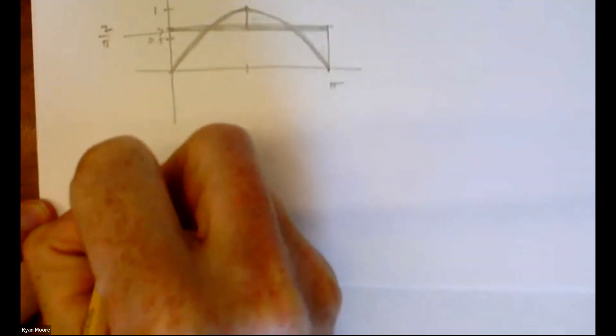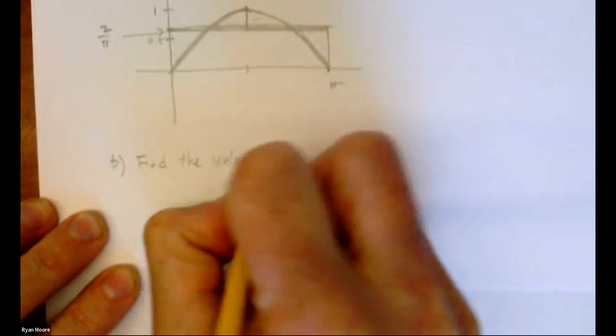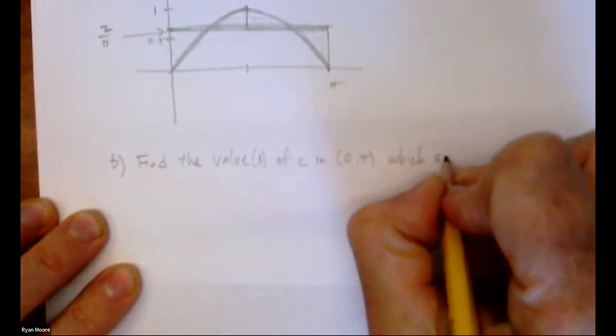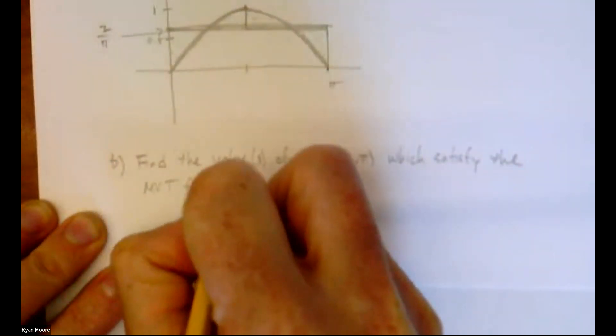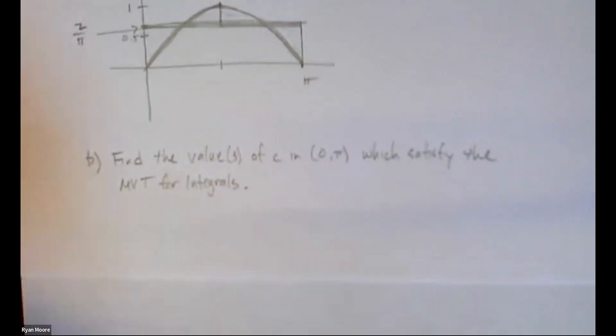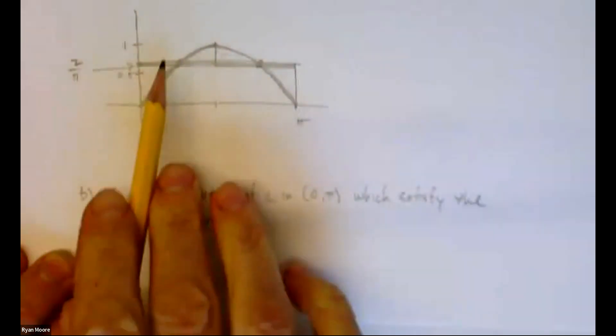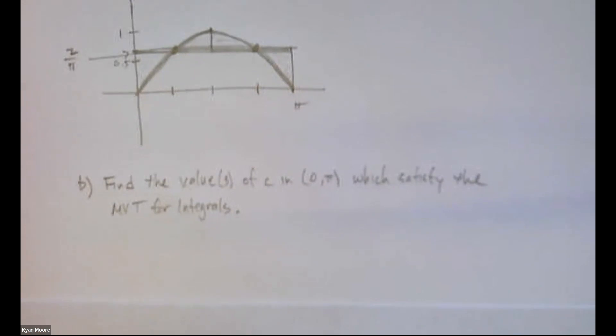This question had a part B. What was part B? Find the values, value or values of C on that interval which satisfy the mean value theorem for integrals. Okay, so the mean value theorem for integrals said at least once, but maybe more than once, the function itself will pass through the average. So for us, we can see it's going to be twice. We're trying to figure out where does that function actually pass through its average.